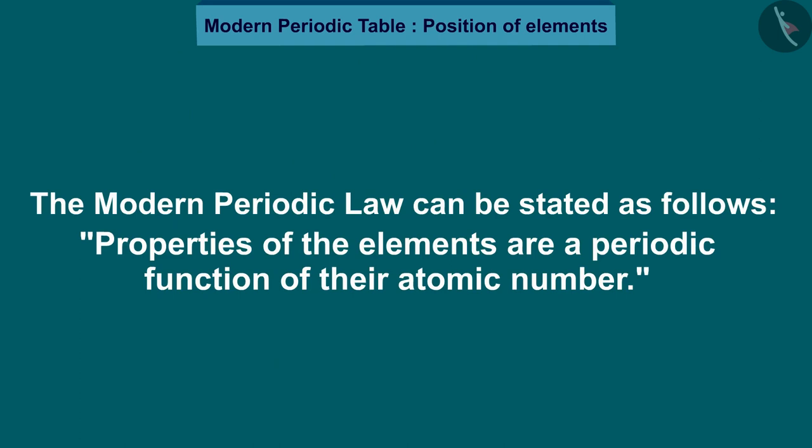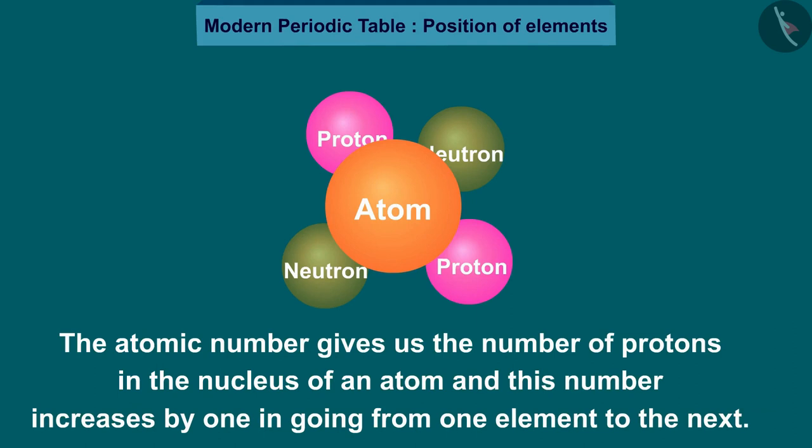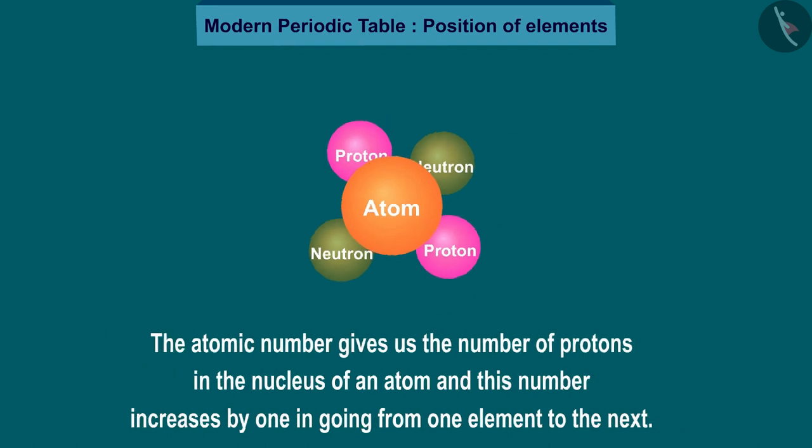The atomic number gives us the number of protons in the nucleus of an atom and this number increases by one in going from one element to the next. Elements when arranged in order of increasing atomic number lead us to the classification known as the modern periodic table.